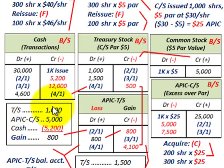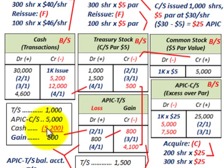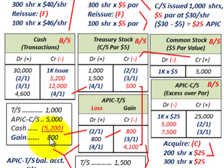The balancing entry: we have $1,000 in treasury stock and $5,000 in additional paid-in capital for common stock, totaling $6,000, less the cash payment of $5,200. So we have a gain of $800. This is where we credit our additional paid-in capital for treasury stock for $800. Similar to the cost method, gains go as a credit to additional paid-in capital, and losses are debited.